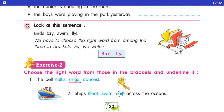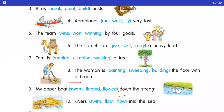Number three: birds dash nest — break / paint / build. Bird kya karata hai? Build. Right answer is build.